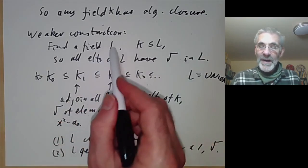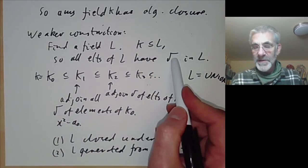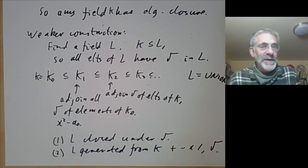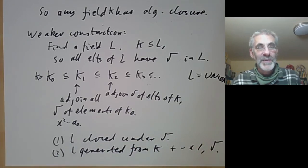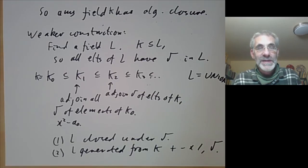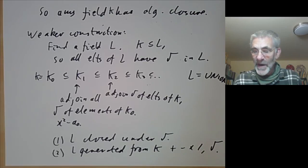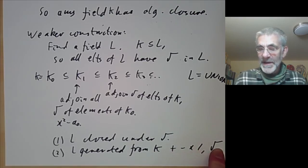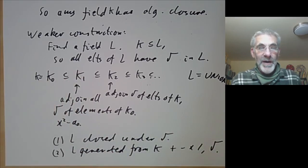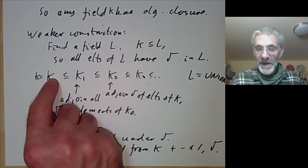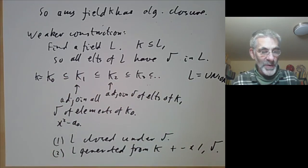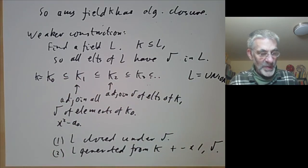By the way, if you wonder why anybody should care about fields closed under taking square roots, that's related to the old problem of squaring a circle or trisecting an angle, because the numbers you can construct using a ruler and compass turn out to be exactly the numbers you can construct from the rational numbers using the field operations and taking square roots. So a number can be constructed by ruler and compass if and only if it's contained in the field you get by starting with the rationals and taking its closure under square roots. These are sometimes called Euclidean numbers.